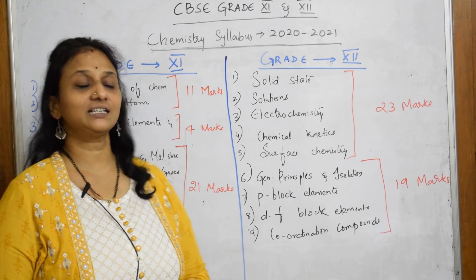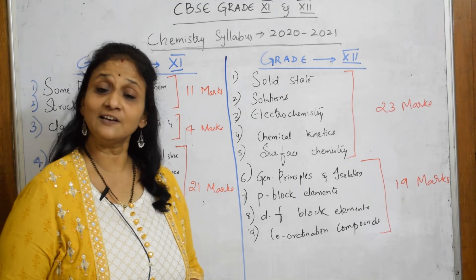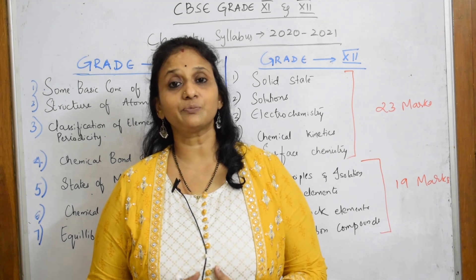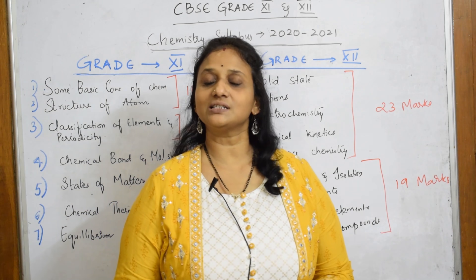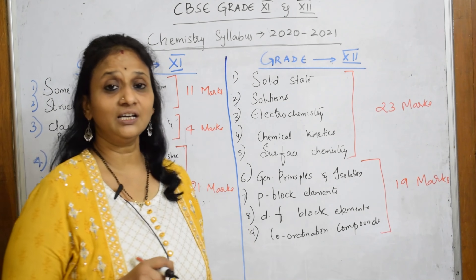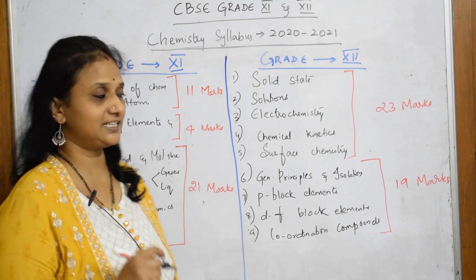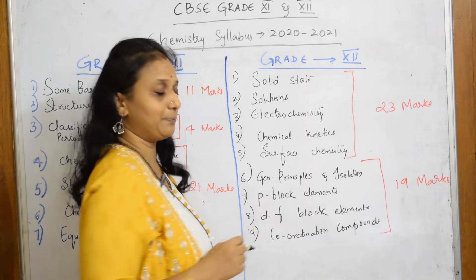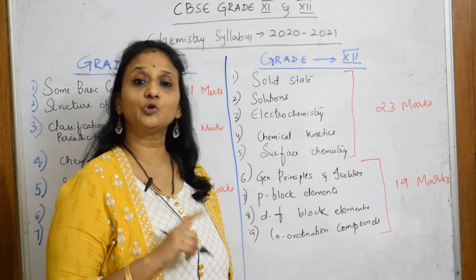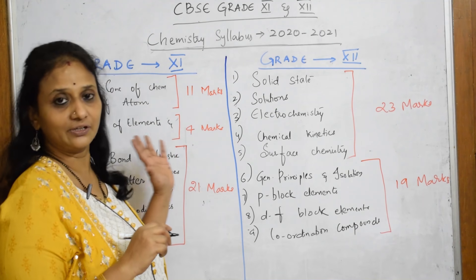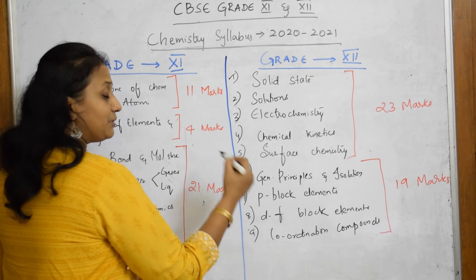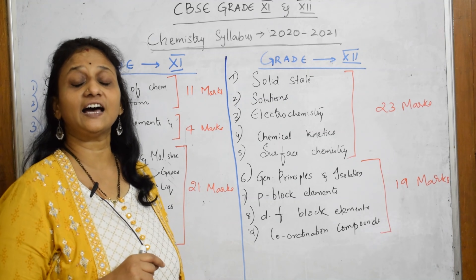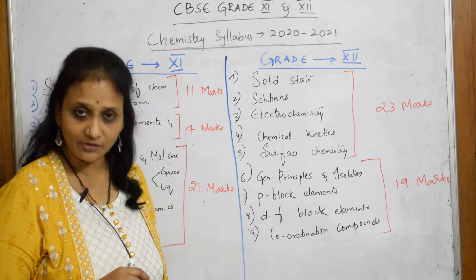Let us see the CBSE grade 11 as well as grade 12 chapters — what are included for this academic year and what are excluded. In last year's syllabus we had one addition compared to previous years: for grade 11, solid state was one addition, and in p-block, group 15 was added to grade 11. Now let us see what changes have been made in CBSE grade 11, and then we'll move to grade 12.